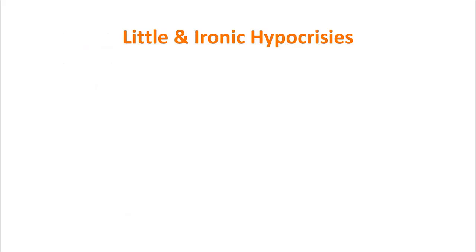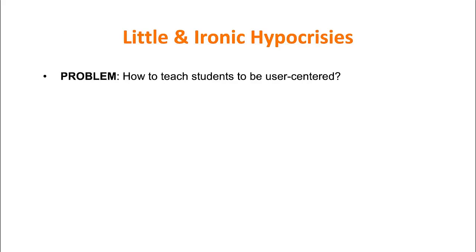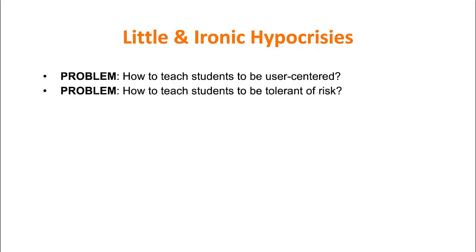One of the problems we've seen in education generally is how we teach students to act as agents in the real world—let alone be user-centered. How do we teach them to be tolerant of risk? We claim to teach them to think critically and creatively and write well, but those aren't necessarily the same skills that allow you to be a really effective employee, business owner, or job creator. Any of those things require you to think about risk and tolerate uncertainty in ways that the typical classroom environment just doesn't.